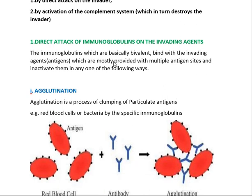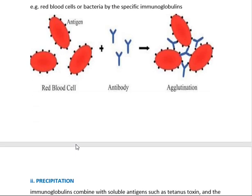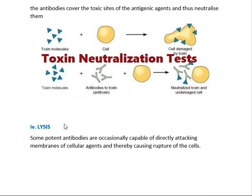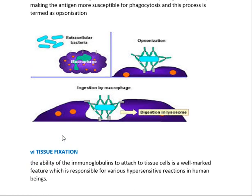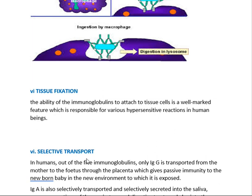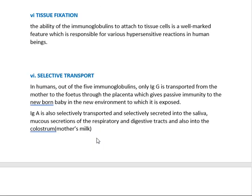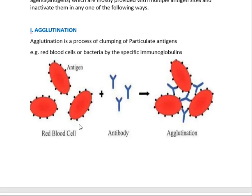The first way — antibodies directly attacking the invading agents. Immunoglobulins are basically bivalent, meaning they have two antigen binding sites, and they bind to antigens which are mostly provided with multiple antigen sites, and inactivate them in several ways. These ways are: agglutination, precipitation, neutralization, lysis, opsonization, tissue fixation, and selective transport. By these direct methods, the antibody targets the antigen.